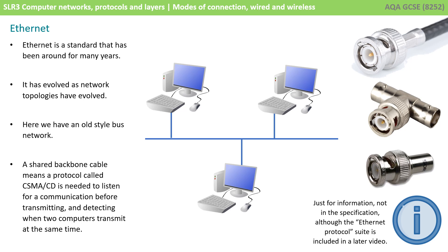Data is transmitted in frames, which include a preamble of bits used to synchronise the transmission and receiver clocks, and a start frame delimiter to signify the start of important data. The frame also contains the source and destination address for the network interface card, known as a MAC address, and the actual data, which could include other protocol information such as IP addressing for wide area network communication. Part of the frame also contains a cyclic redundancy check, used for error checking, to ensure the destination computer knows whether the transmission was successful.